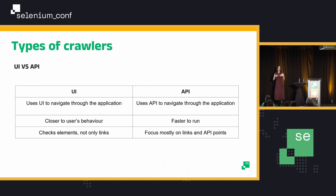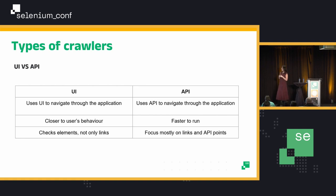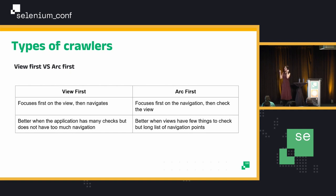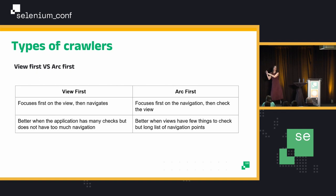The UI will be closer to the user behavior — a little bit more close to what the user is going to see. The UI will check not only the links, but also other elements. You can do that with API as well, by checking the response of the API request you sent. But it's more generally used for checking broken links, like a 404. And then we have view-first and arc-first.